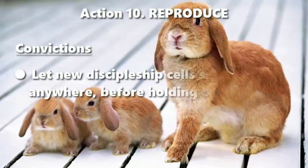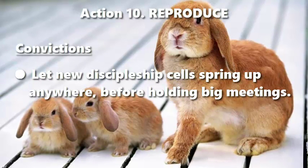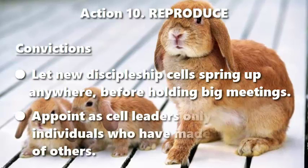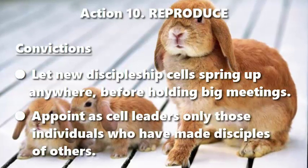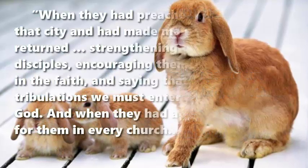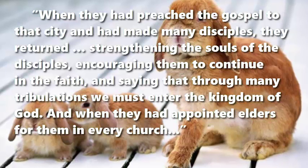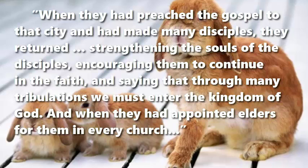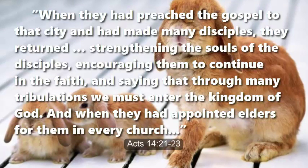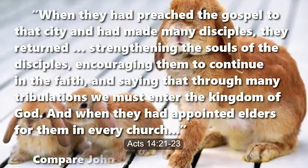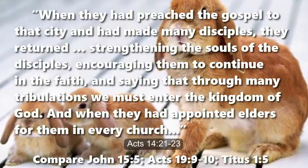Action 10. Let new discipleship cells spring up anywhere before holding big meetings. Appoint as cell leaders only those individuals who have made disciples of others. "When they had preached the gospel to that city, and had made many disciples, they returned, strengthening the souls of the disciples, encouraging them to continue in the faith, and saying that through many tribulations, we must enter the kingdom of God. And they appointed elders for them in every church."